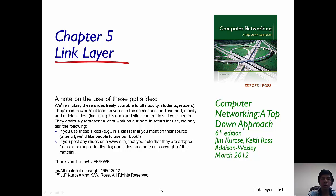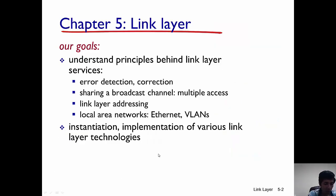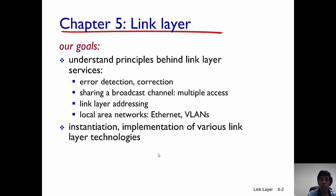Today we begin our discussion on the link layer. So far we have discussed the application layer, the transport layer, and the network layer. The goals of this chapter are to understand the principles behind the different link layer services, talk about error detection and correction, and look at how multiple routers and hosts share a broadcast channel, which is known as multiple access. We will also look into link layer addressing.